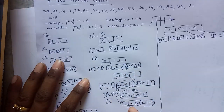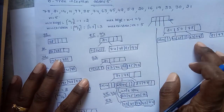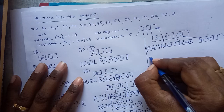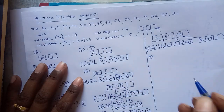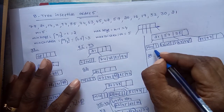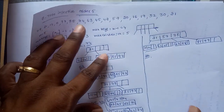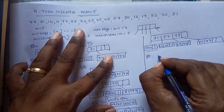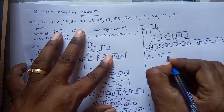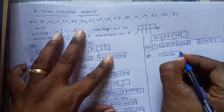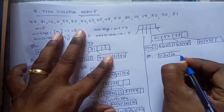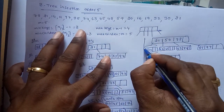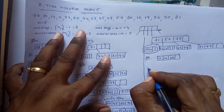Now insert 20. The position of 20 is less than 21, so it goes to the leftmost node. That node becomes 11, 14, 20. The remaining tree stays the same. Now insert 16 — that node becomes 11, 14, 16, 20.